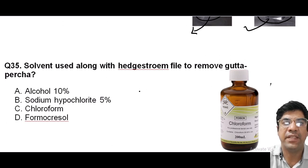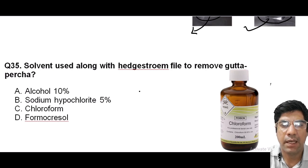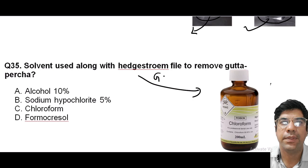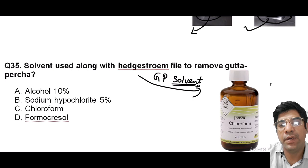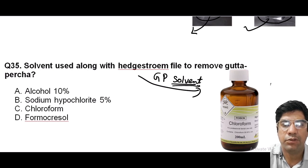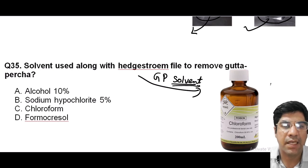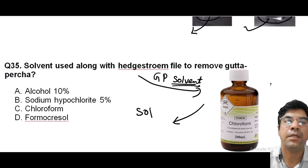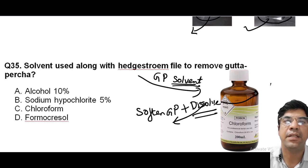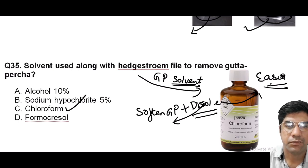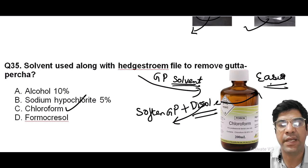The solvent used along with H-files to remove gutta-percha is chloroform. Chloroform is a solvent that is a gutta-percha solvent — it is applied to gutta-percha within the root canals, softening and dissolving the GP, making it easier to remove. Chloroform is effective in softening and dissolving gutta-percha.